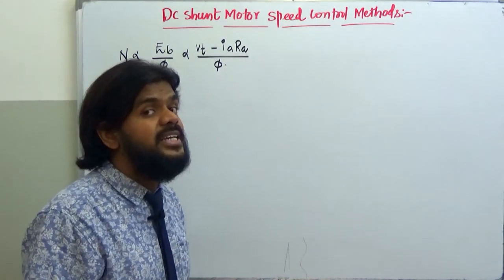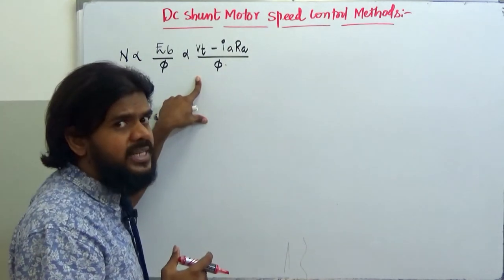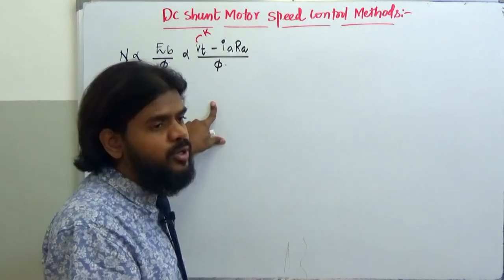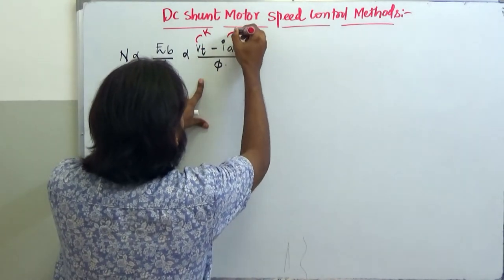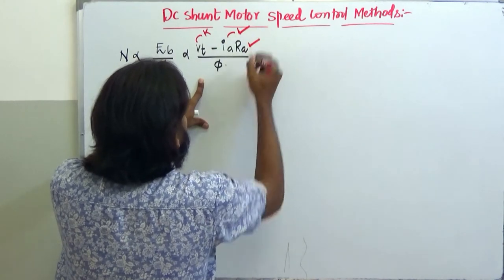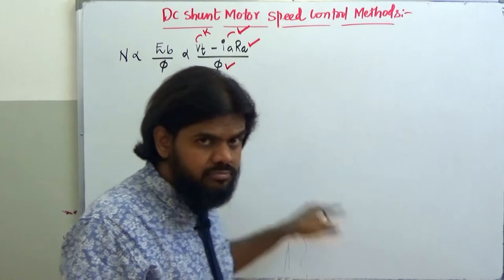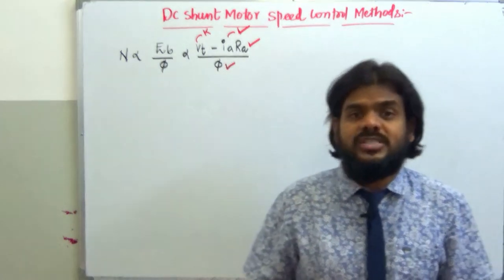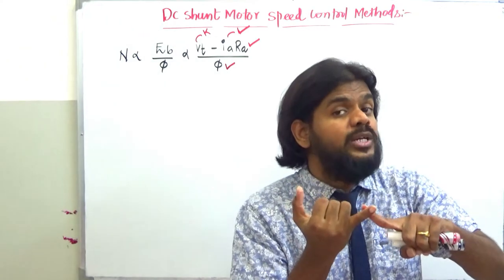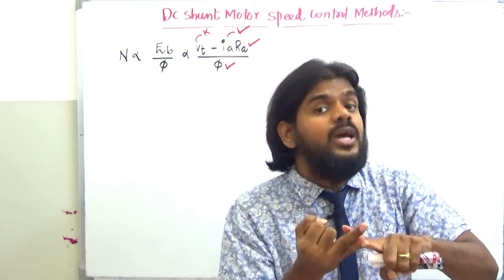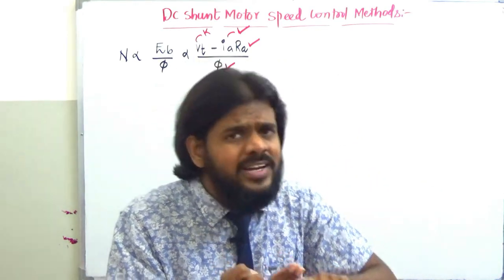I will make an assumption that I am dealing with these methods of speed control under constant voltage applications — operating at constant supply voltage. The remaining parameters are Ia, Ra, and flux φ. With reference to this equation, the speed can be varied by varying three parameters: Ia, Ra, or φ.